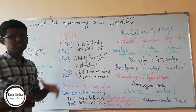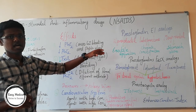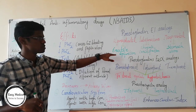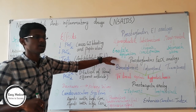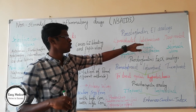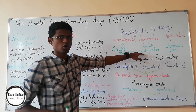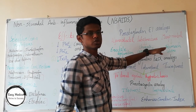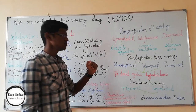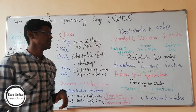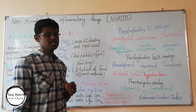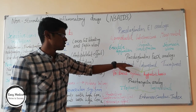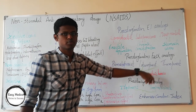These drugs have various uses. Alprostadil is used for erectile dysfunction. Lubiprostone is used for chronic constipation. And misoprostol is used as a prostaglandin analog. Prostaglandin F2 alpha analogs include bimatoprost, latanoprost, and travoprost.